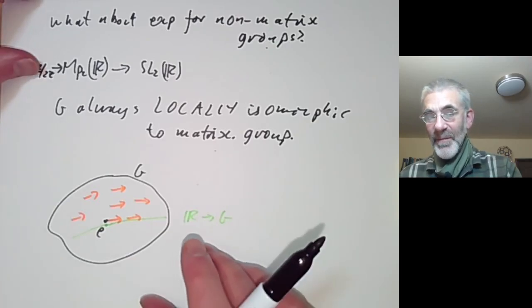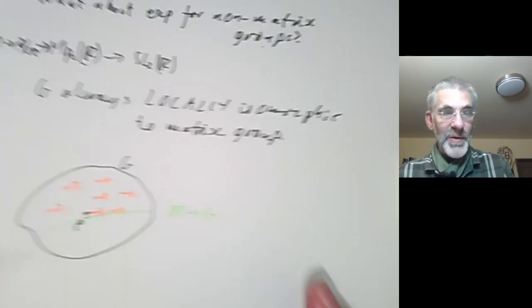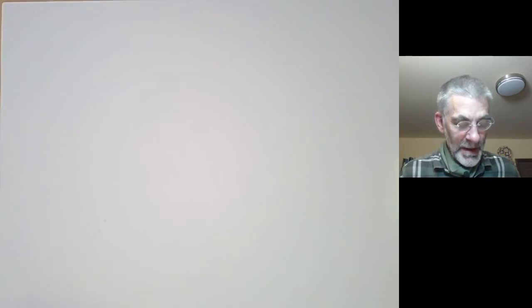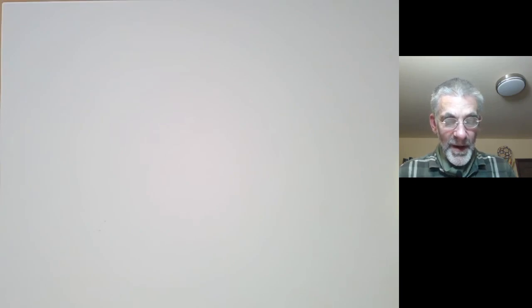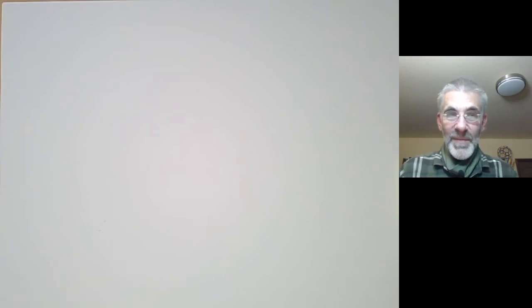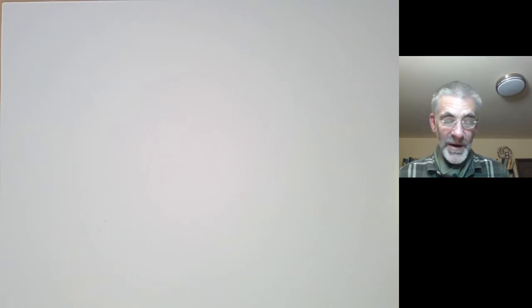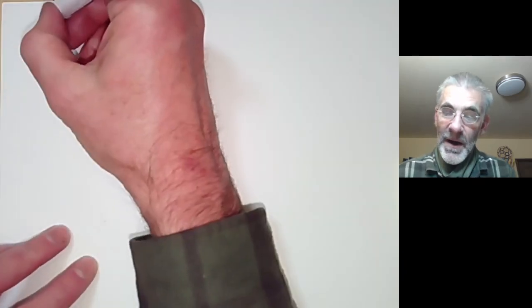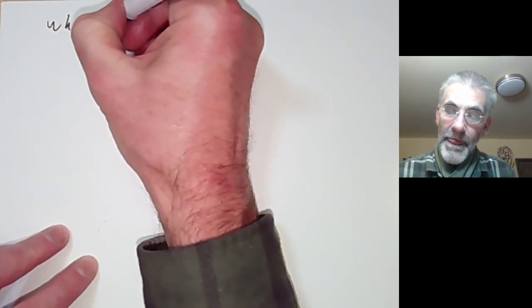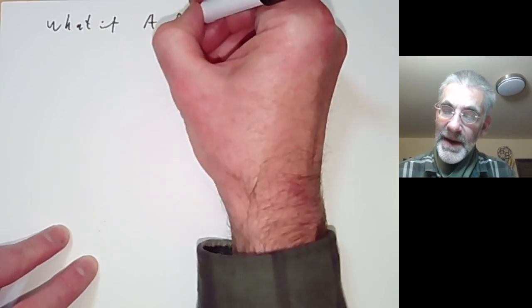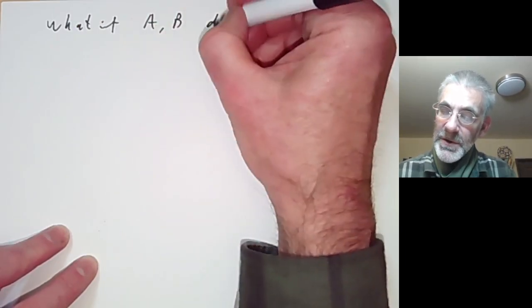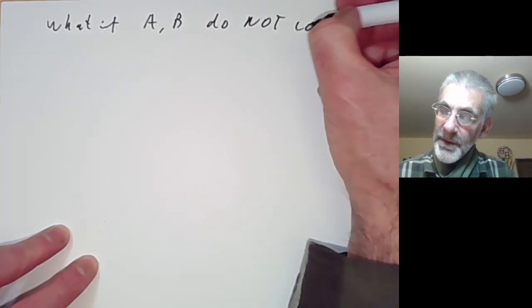We're going to keep things simple and just talk about matrix groups for the rest of this lecture. We said that exp(A + B) = exp(A)·exp(B) if A and B commute. So next we can ask: what if A and B do not commute?